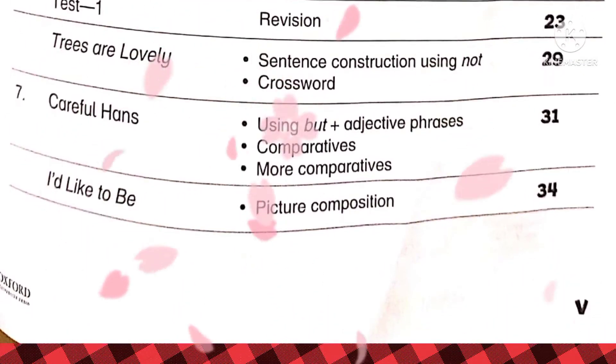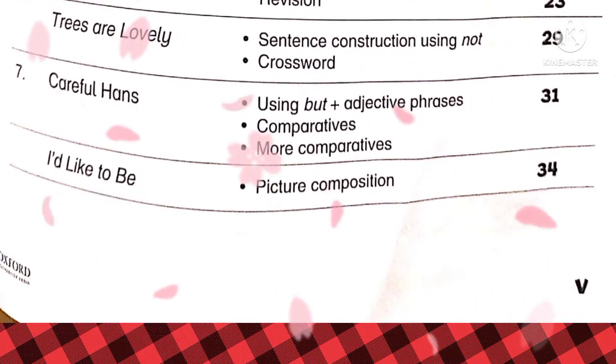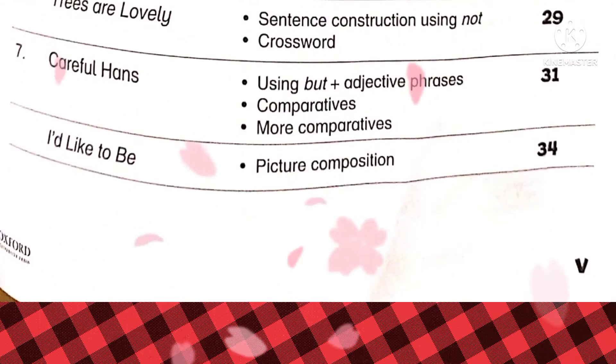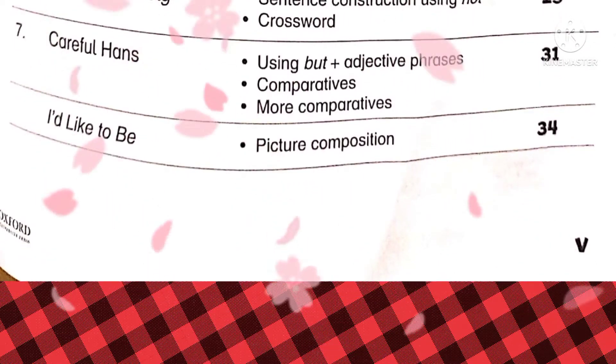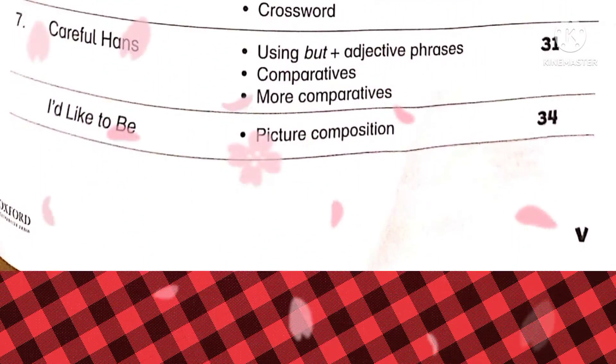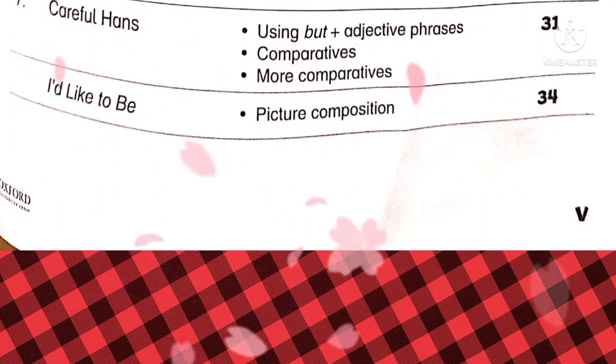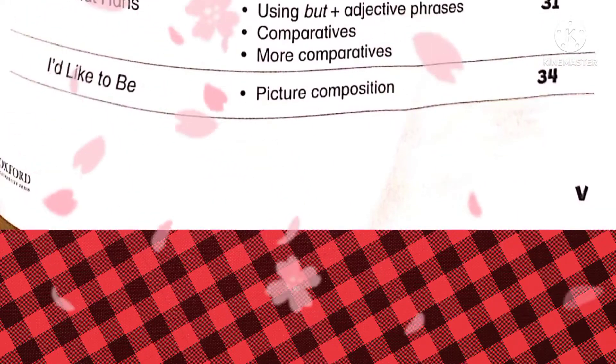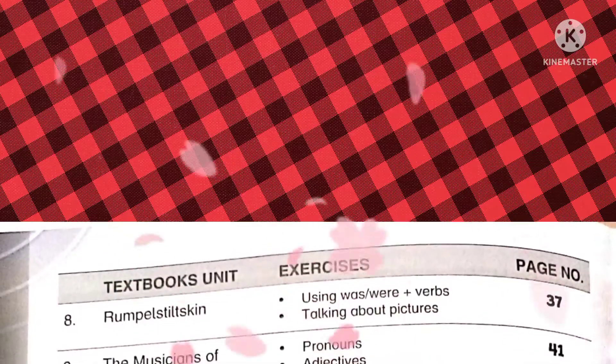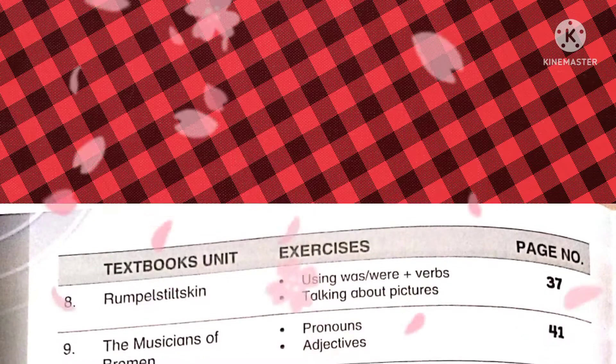Next is 'Trees are Lovely,' where we will learn sentence construction using 'not' and crosswords. Next is unit number seven, 'Careful Hands.' We will learn using 'but' plus adjective phrases, comparatives, and more comparatives. Next is 'I'd Like to Be,' where we will look at picture composition. On the next page is unit number eight, 'Rumpelstiltskin.'